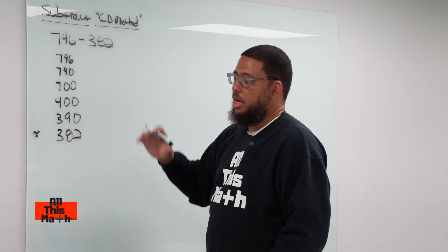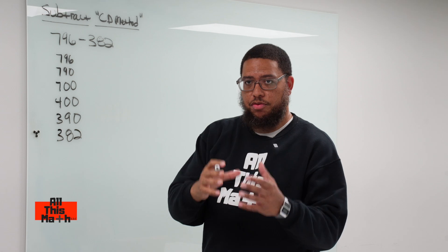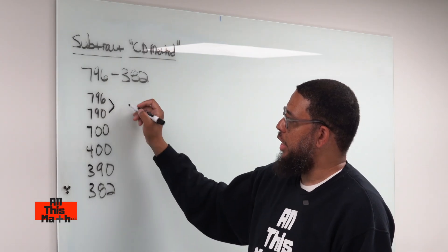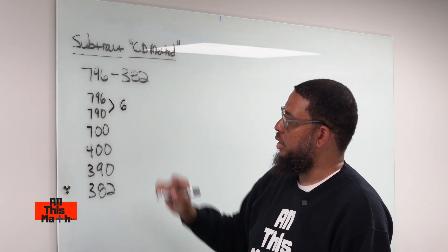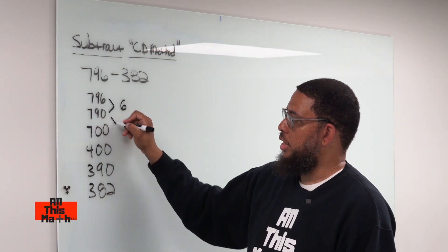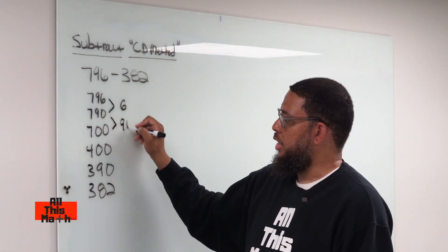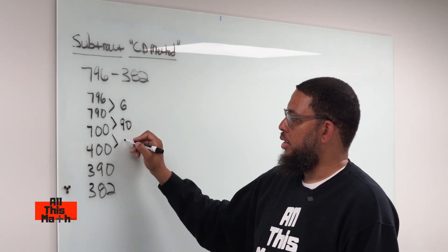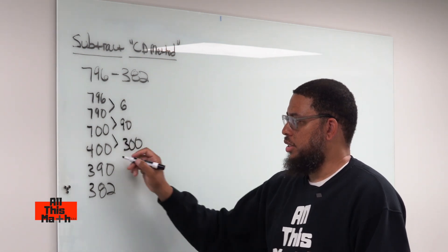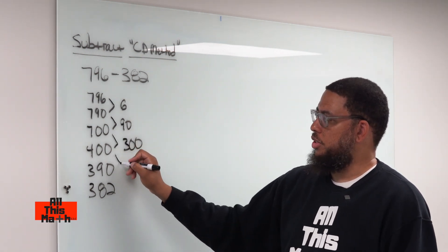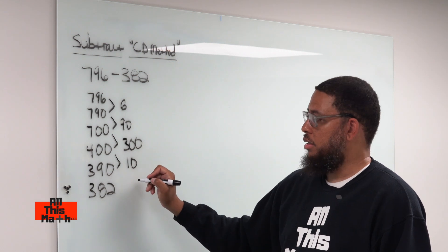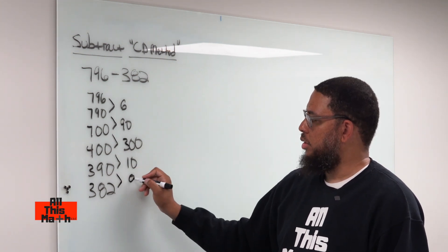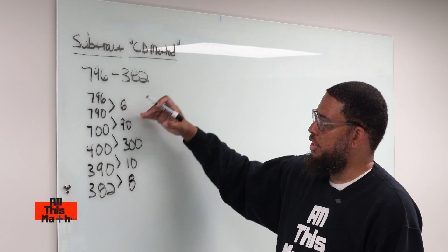Now that we've written all these numbers out, we're going to find the differences between every pair of numbers. The difference between 796 and 790 is 6. The difference between 790 and 700 is 90. The difference between 700 and 400 is 300. The difference between 400 and 390 is 10. And the difference between 390 and 382 is 8.